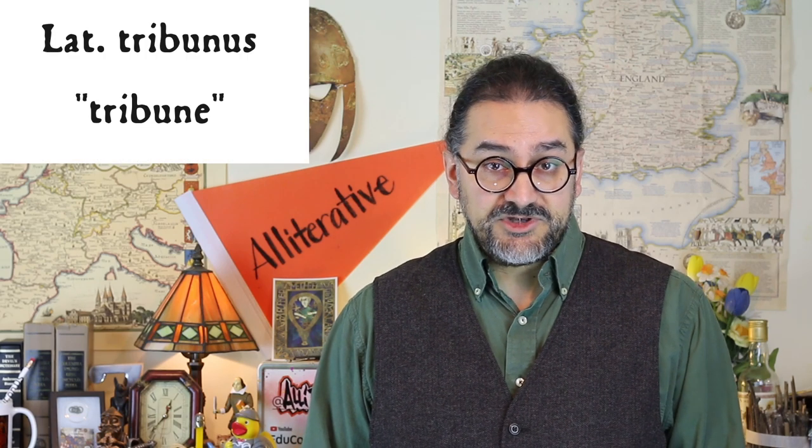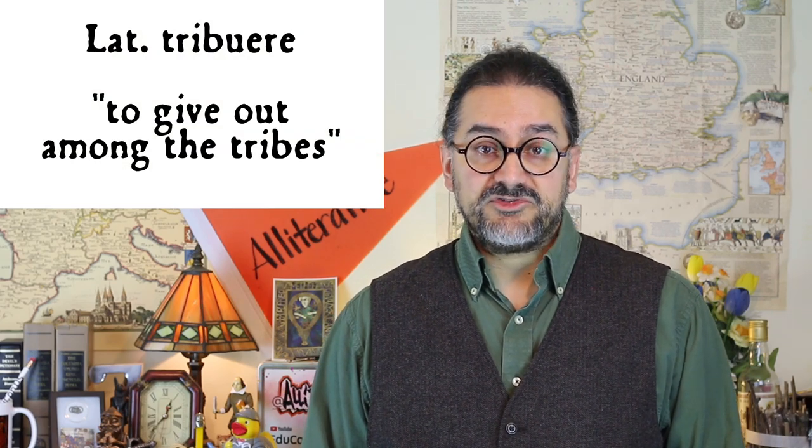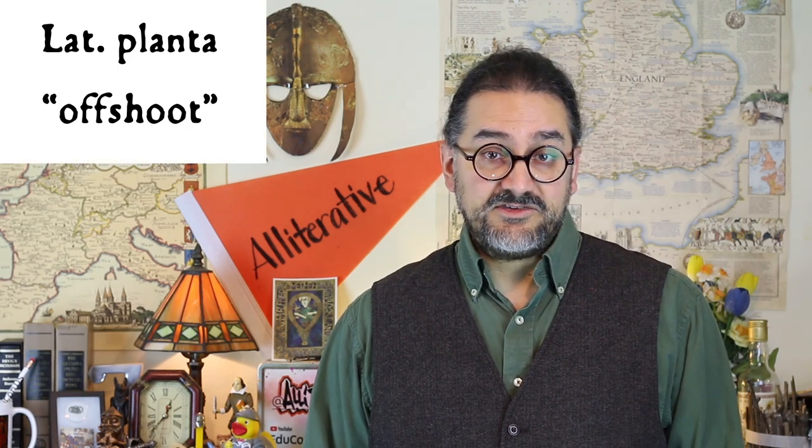Related to 'tribus' is 'tribunus,' originally the head of a tribe, from which we get 'tribune,' and 'tribura,' to give out amongst the tribes, from which we get 'contribute,' 'distribute,' 'retribution,' and 'tribute.' The word 'clan' comes, unsurprisingly, from Gaelic — Scots Gaelic 'clan' originally meant offspring, coming to refer in the highlands to a tribe holding land in common under a chieftain. The Goidelic branch of Celtic had no initial 'p' sound, so what was originally a 'p' became Gaelic 'c' in 'clan.' This word was borrowed from Latin 'planta,' in the sense of an offshoot — from which we get the word 'plant,' and indeed the word 'plant' in non-Gaelic Middle Welsh means children.